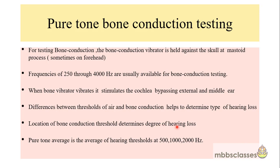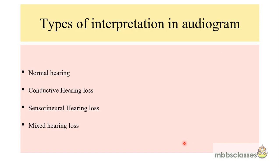The pure tone average is calculated as the average of hearing thresholds at frequencies of 500, 1000, and 2000 Hz. In an audiogram, results are divided into four categories: normal hearing, conductive hearing loss, sensorineural hearing loss, and mixed hearing loss.